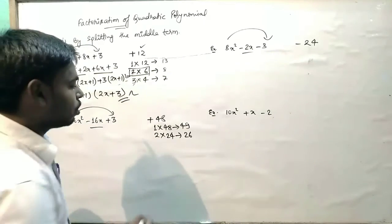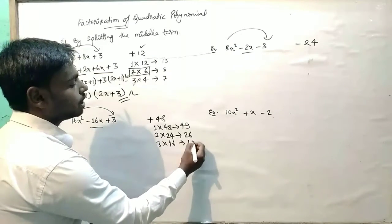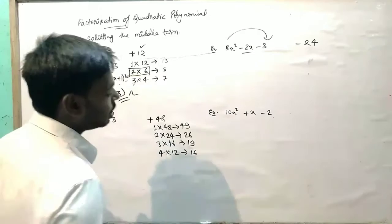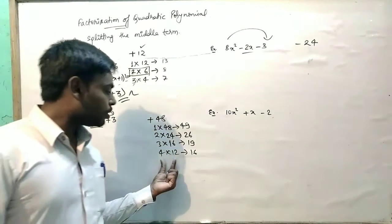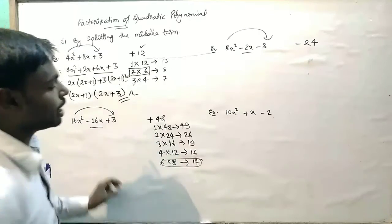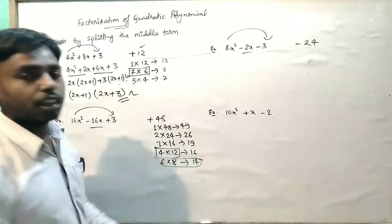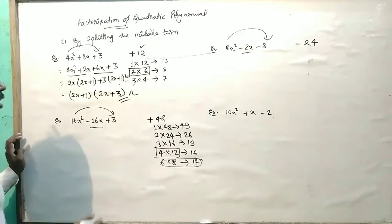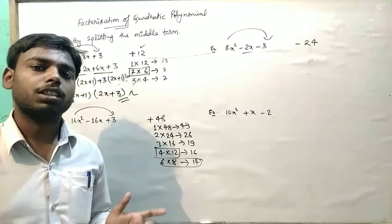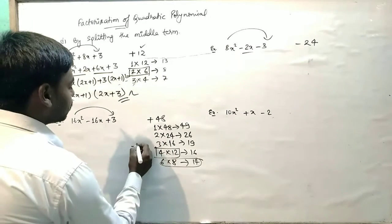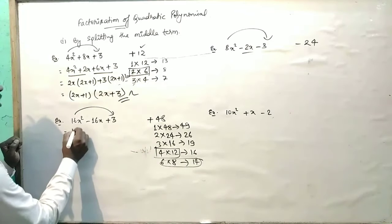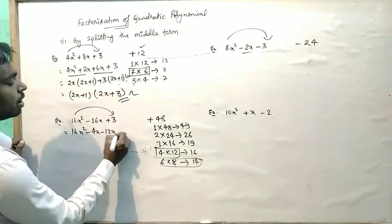Now for the next question. We need 16. Factors: 3 into something gives 16, addition gives 19; 4 into 2 gives 8, add gives 16. We need -4 and -12 such that multiplication gives 48... wait, we need 16. So we take -4 and -12. Then we write: 16x squared minus 4x minus 12x plus 3.